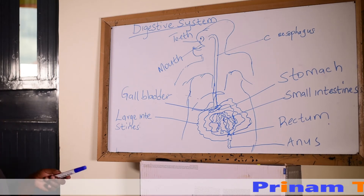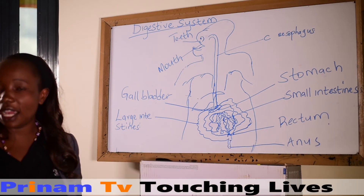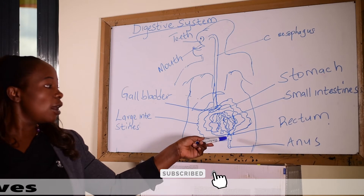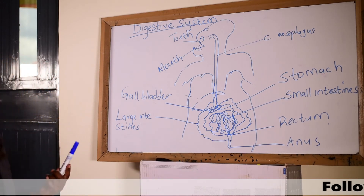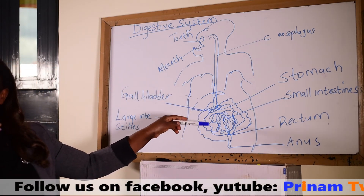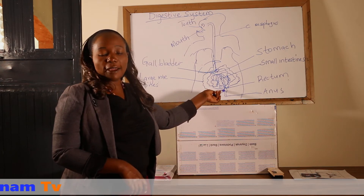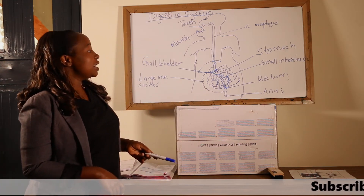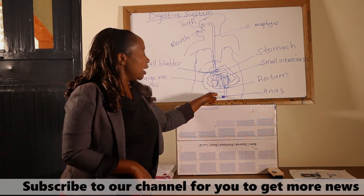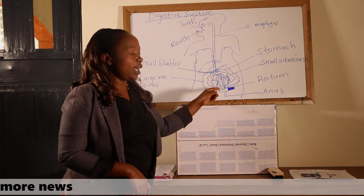The rectum is like a bag where undigested food is stored, ready to be expelled out of the body. When the undigested food is taken into the rectum, it is when you feel like going to relieve yourself — it means there are unwanted products that need to be removed. After being stored in the rectum, the undigested food is taken down into the anus, which is the end opening of the digestive system where waste products are expelled.